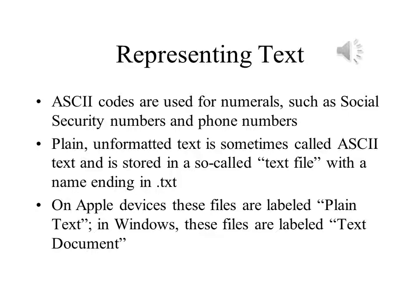ASCII codes can be used to represent any kind of text that our computer will work with. We can use it to store social security numbers, phone numbers, and whatever other information we might need. We can store this information in a plain file containing only unformatted text. To make it easier to find and to use, we will use the file name extension .txt. This is what we mean by a text file. On computers running Windows, these files are called text files or text documents. On Apple devices, they are called plain text.